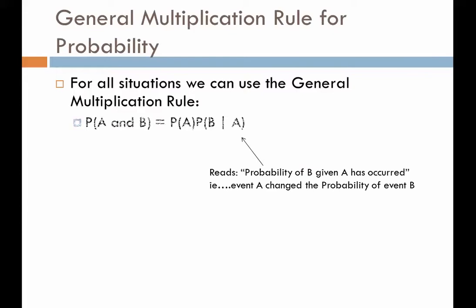Let's look again at the general rule for probability. For every situation where we have one event followed by a second and we want to know the probability of A occurring and then B occurring, we find the product of the two events. We add the vertical bar notation here — this means 'given.' So we read this as: the probability of A multiplied by the probability of B, assuming that A has already occurred.